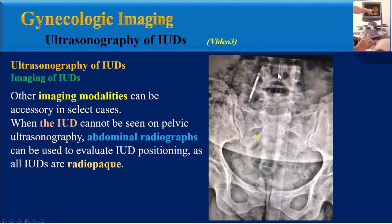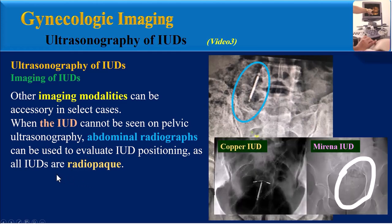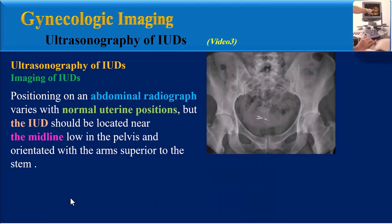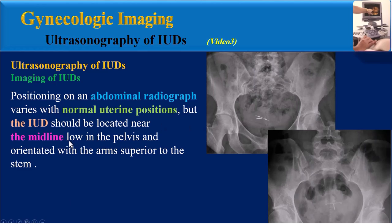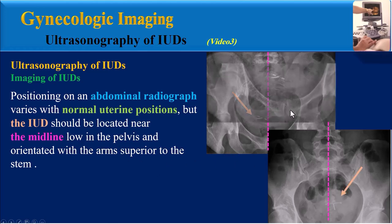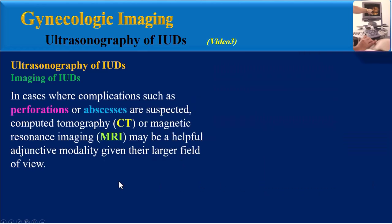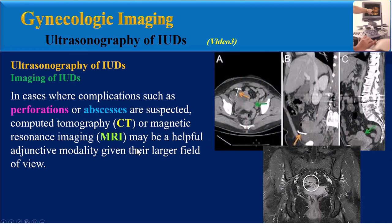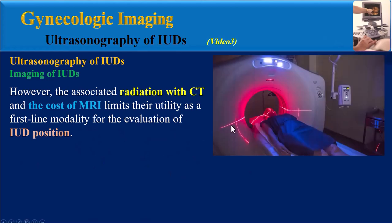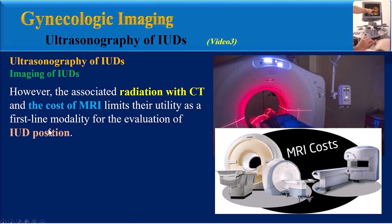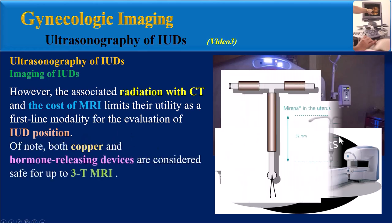When the IUD cannot be seen on pelvic ultrasonography, abdominal radiographs can be used, as all IUDs are radio-opaque. On abdominal radiograph, the IUD should be located near the midline, low in the pelvis, and oriented with the arms superior to the stem. In cases where complications such as perforation or abscesses are suspected, CT or MRI may be a helpful adjunctive modality given their larger field of view. However, the radiation from CT and the cost of MRI limits their utility as a first-line modality.